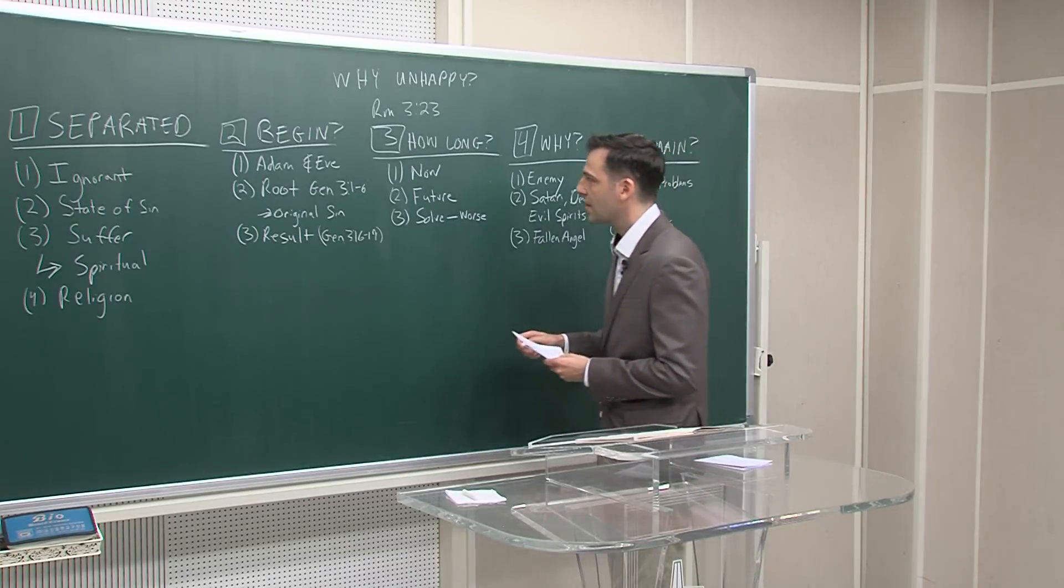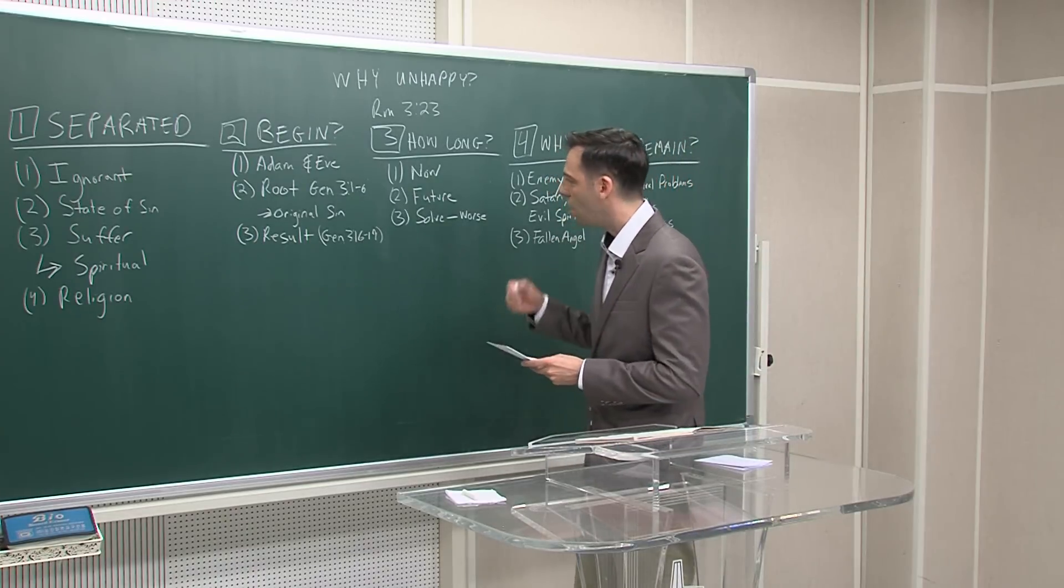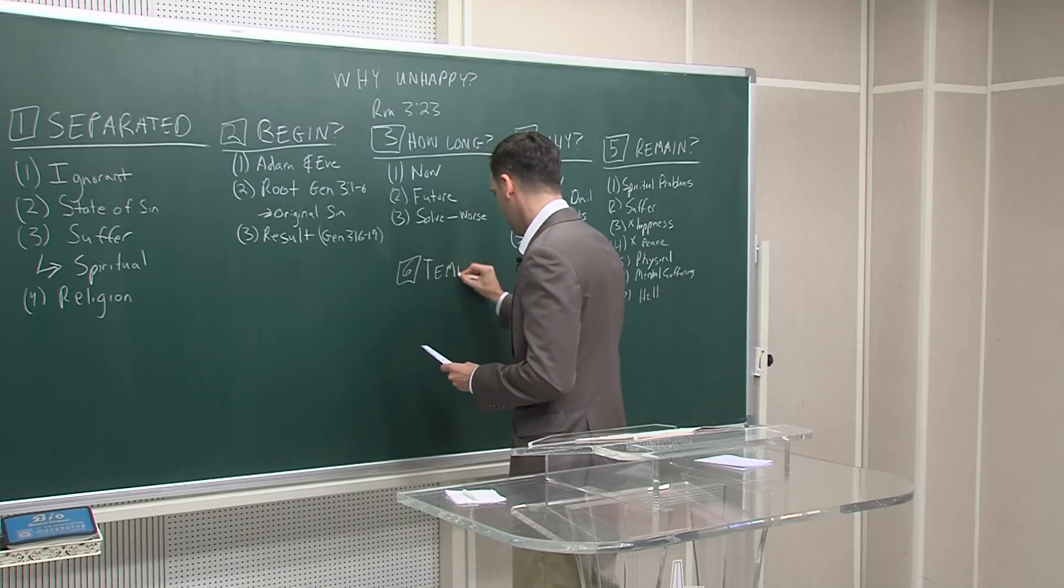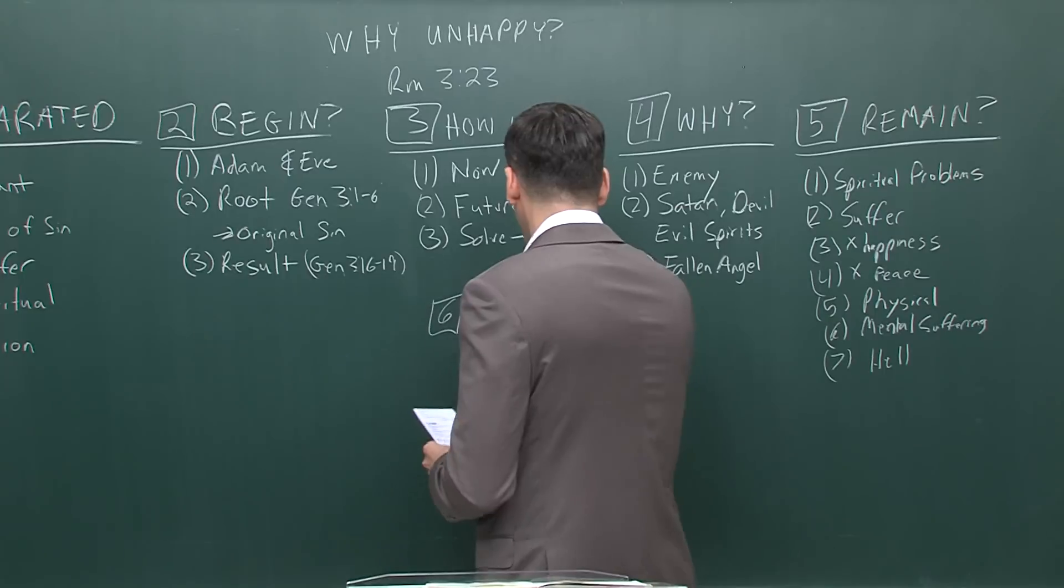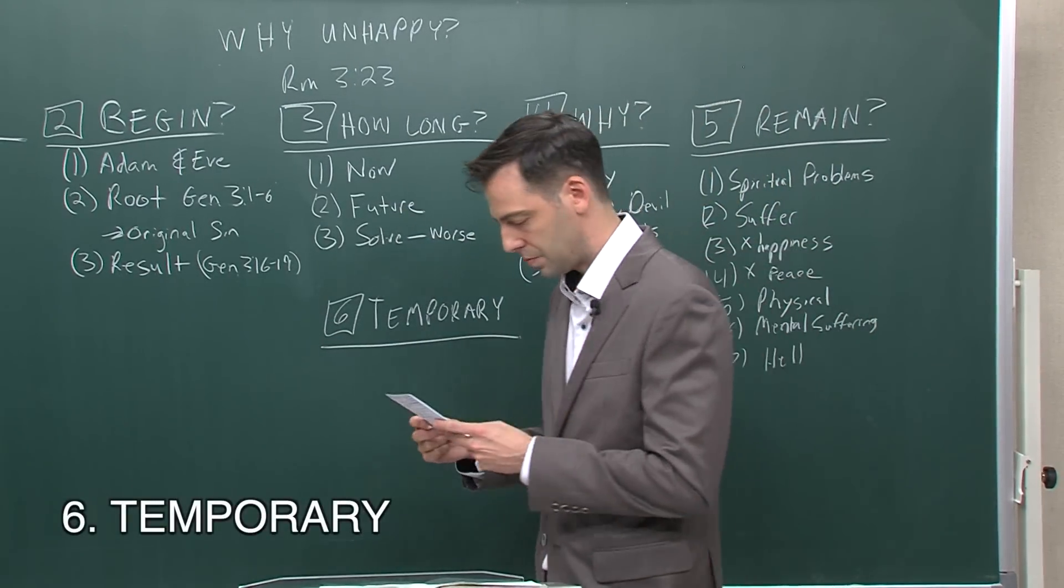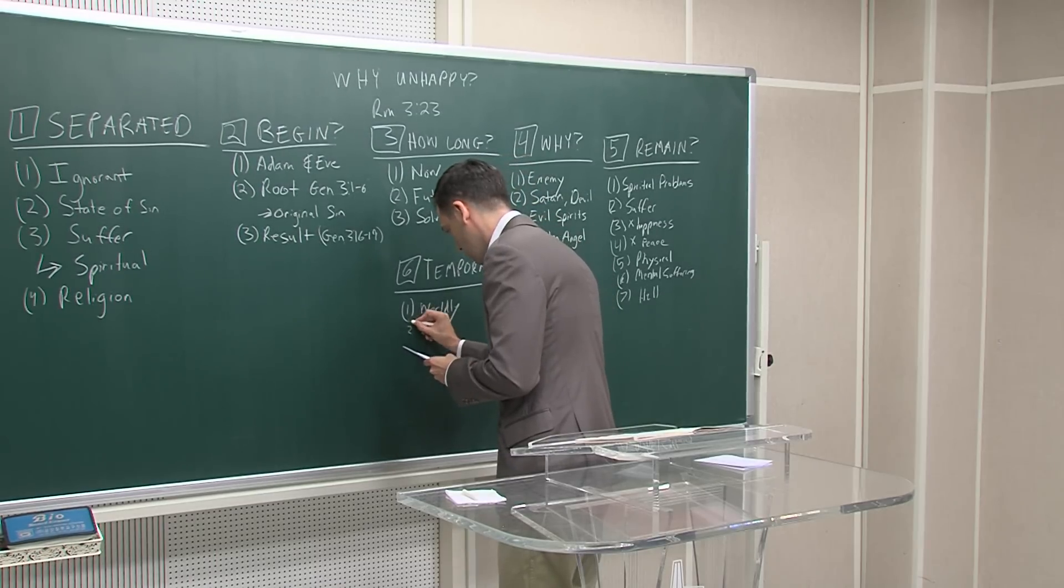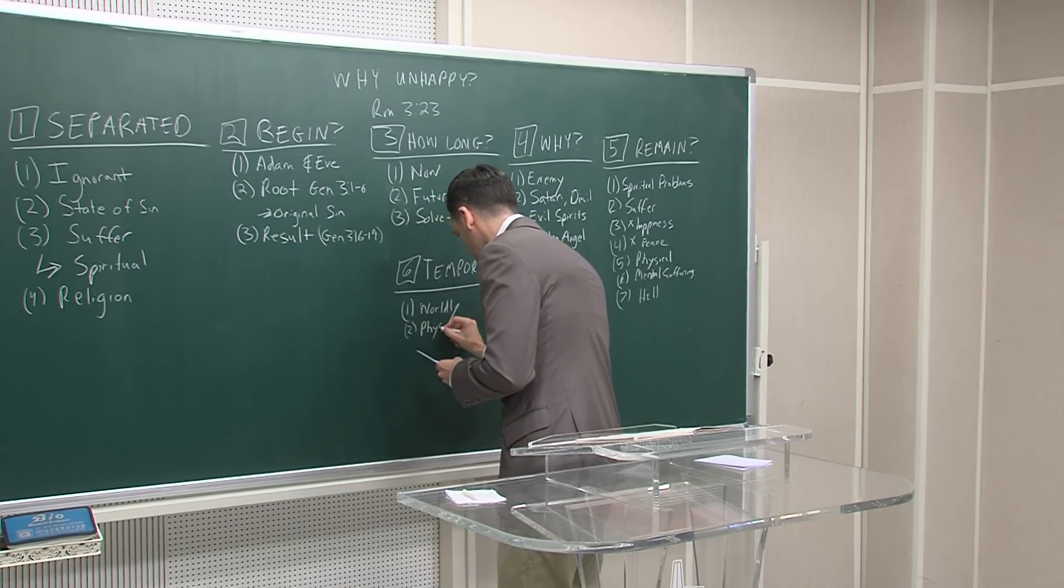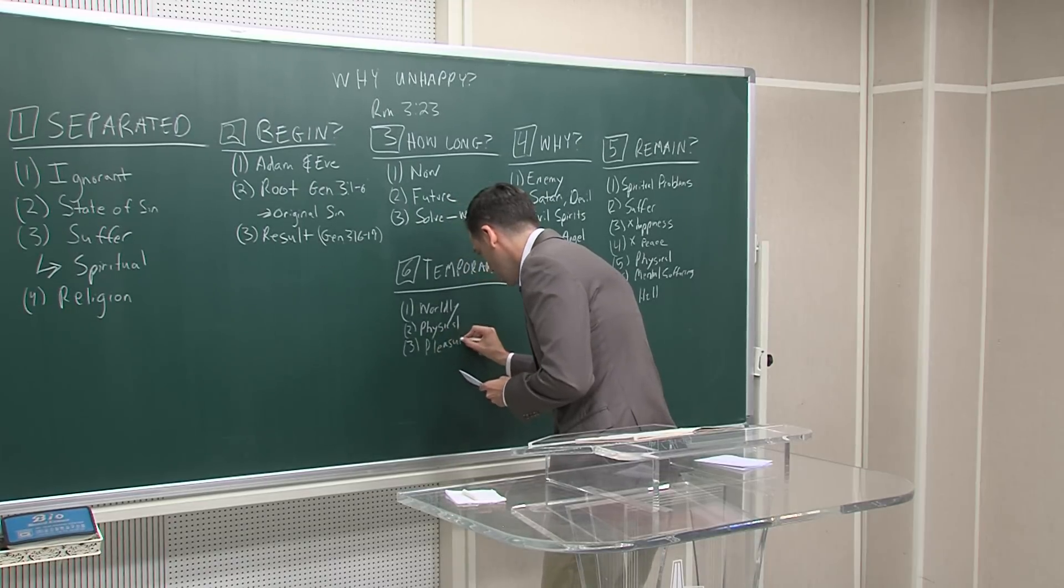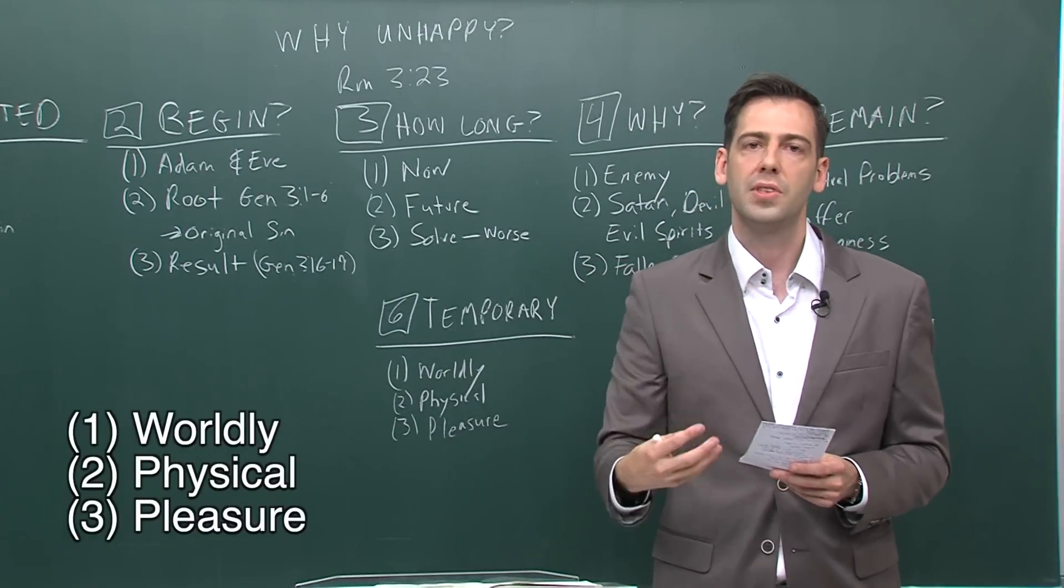So now we are looking for a solution to this problem. And people look in this world for different things to solve it. But all of the things in this world to solve it are all temporary. In that you only have temporary peace through the things in this world. The things that you find peace in they are very worldly. They are very physical. They are only for pleasure. And the thing about pleasure is it always leaves you more empty and more worse off than you started.